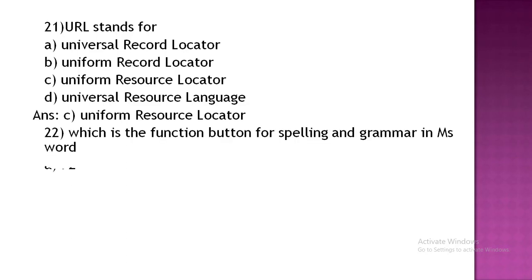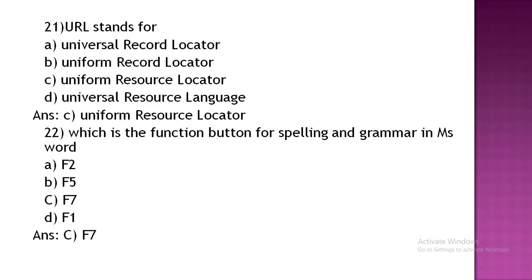Which function key is used for spelling and grammar in MS Word? Option A: F2. Option B: F5. Option C: F7. Option D: F1. The correct answer is Option C, F7.